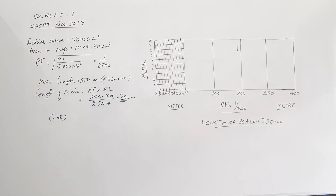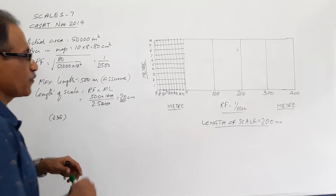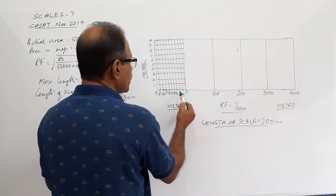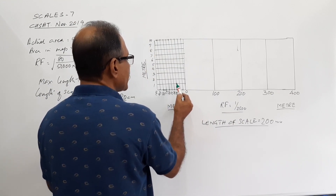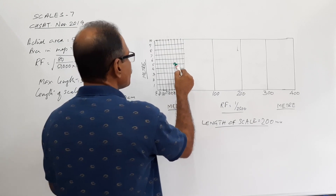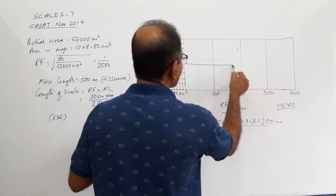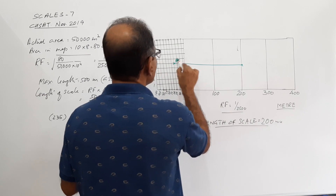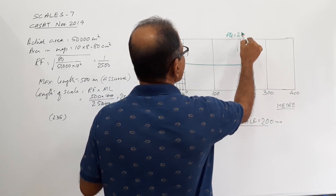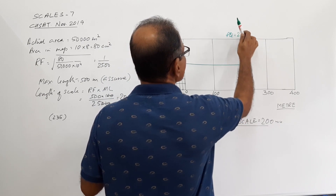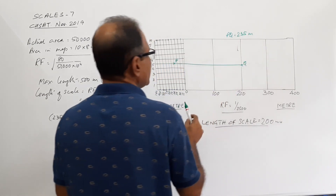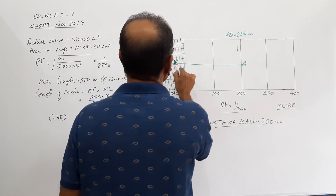Now you are asked to show a distance of 235 meters. From here to here it is 200, 210, 220, 230, then go 231, 232, 233, 234, 235. So PQ equals 235 meters. That is one way of representing it.